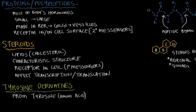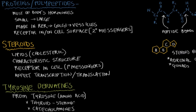An example of tyrosine derivatives are those from the thyroid gland, like T3 and T4 — triiodothyronine and thyroxine — that stimulate metabolism. These tyrosine derivatives act really similarly to steroids. Another example of tyrosine derivatives are catecholamines, which are hormones produced in the adrenal medulla involved in fight-or-flight responses, like epinephrine and norepinephrine. These tyrosine derivatives act really similarly to peptides, binding on the outside of the cell and releasing secondary messengers inside.